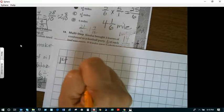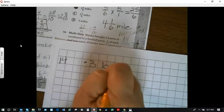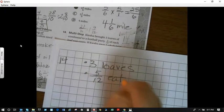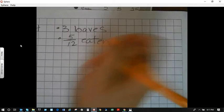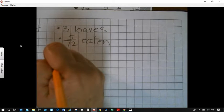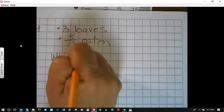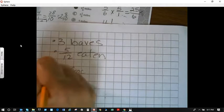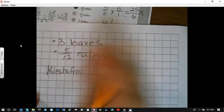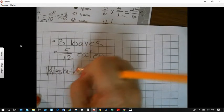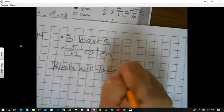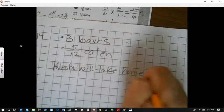Alright, so now let's take a look. We have three loaves, and five-twelfths of it was eaten. Now we want to look to see what part, the question is, what fraction of the loaf Keisha will take home of the cornbread.